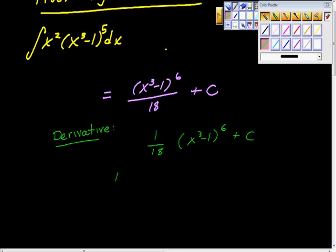We're going to take this 1/18 here, you're right. Going to bring down the sixth here, right? Six times x cubed minus 1 to the fifth, times 3x squared, right?